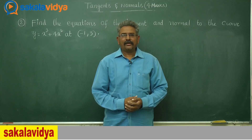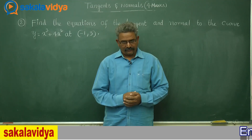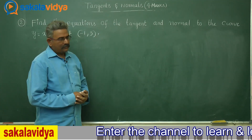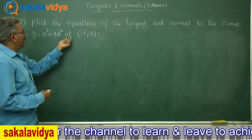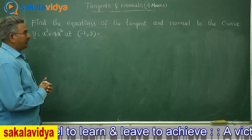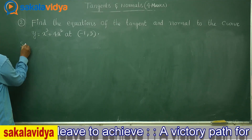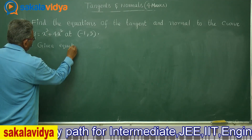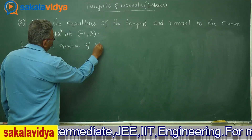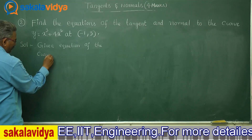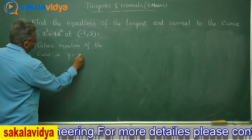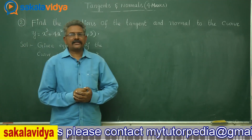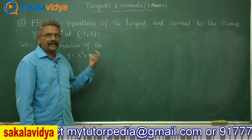Let us solve one more problem on tangents and normals under the four mark section. Find the equations of the tangent and normal to the curve y equals x³ plus 4x² at the point (minus 1, 3). The given equation of the curve is y equals x³ plus 4x². Let us differentiate with respect to x to get dy/dx. This is a straightforward question because we directly get dy/dx.